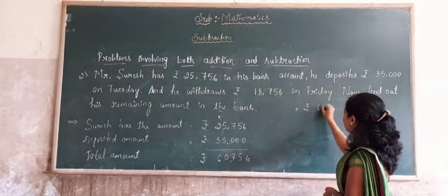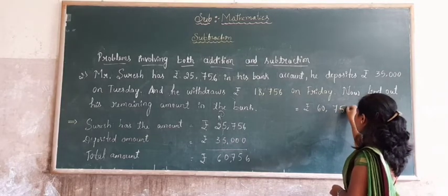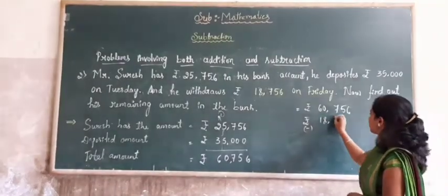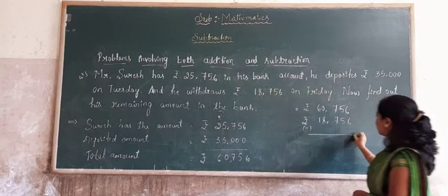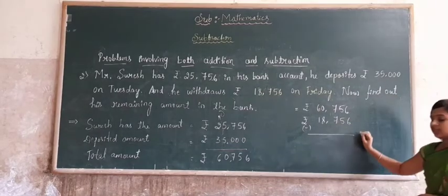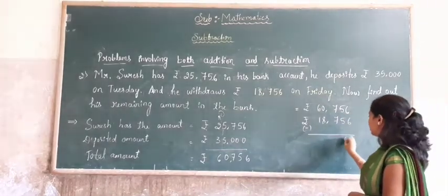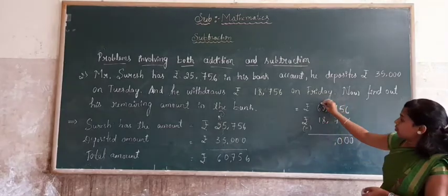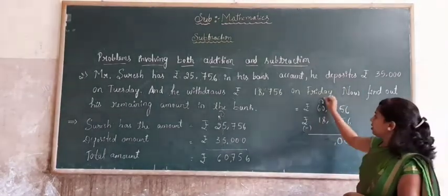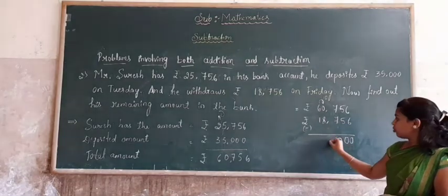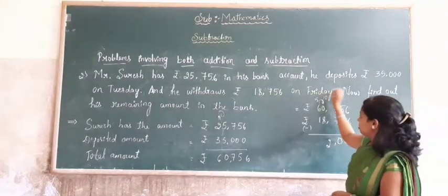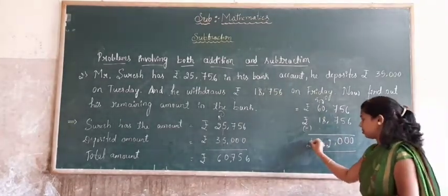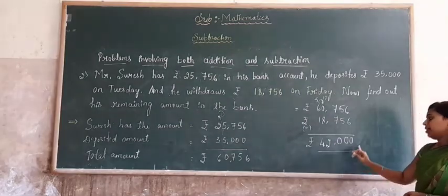This is rupees 60,756. Now subtract 18,756. 6 minus 6 equals 0. 5 minus 5 equals 0. 7 minus 7 equals 0. Is it possible to subtract 0 from 8? No. We have to take the borrow from the previous number. We get 10. 10 minus 8 equals 2. Here the remaining number is 5. 5 minus 1 equals 4. Now Suresh has rupees 42,000 in his account.